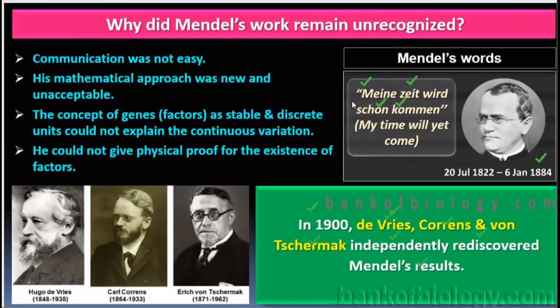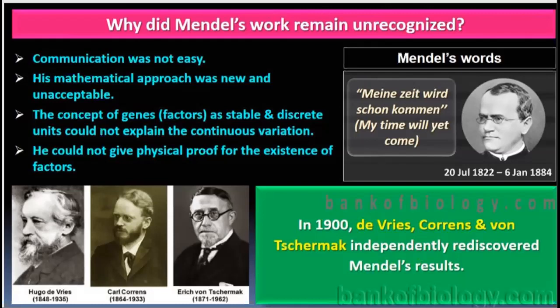Mendel had sent his discoveries to many people. These three scientists worked independently, studied the existing records, and all three concluded that Mendel's work was totally true. In the year 1900, De Vries, Correns, and Von Tschermak independently rediscovered Mendel's results.